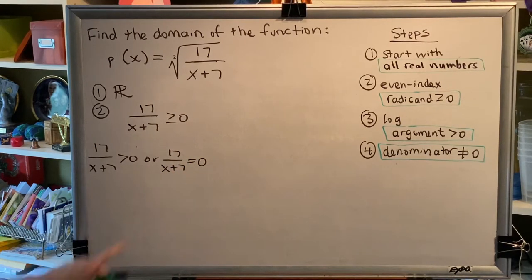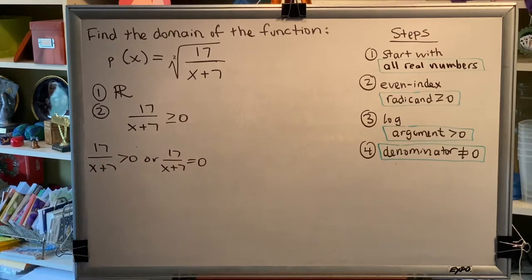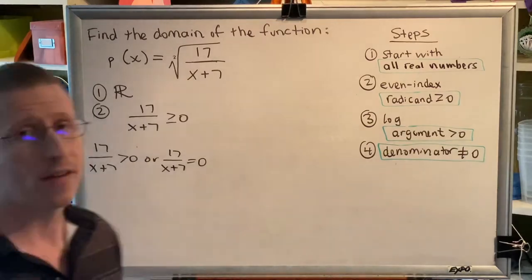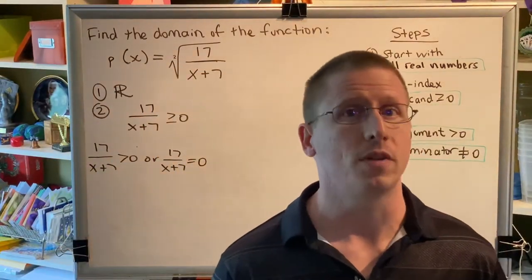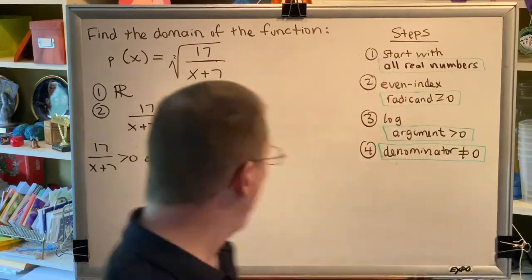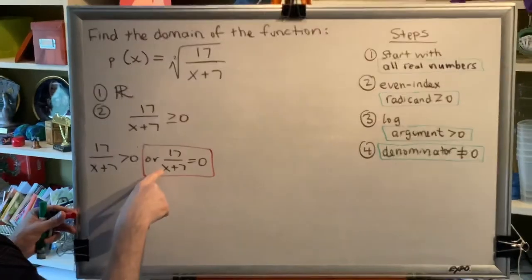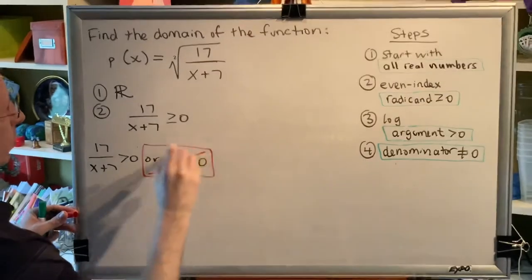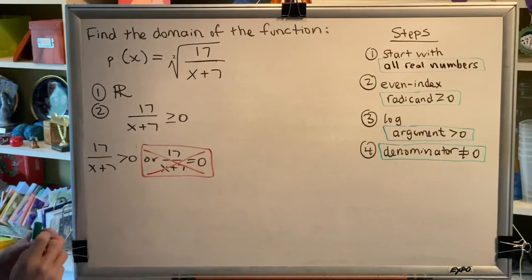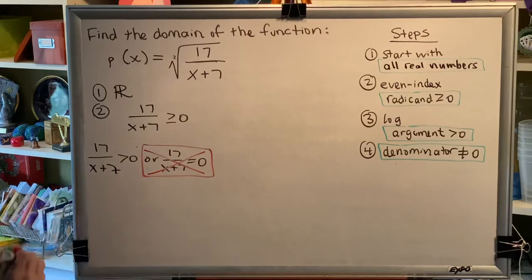Now, we learned previously that a fraction can only equal zero if its numerator is zero. And our numerator here is 17, and there's no variable up in the numerator to change that to a zero in any way. So therefore, this is not possible. It doesn't matter what value you choose for x. This fraction will never equal zero. Therefore, this is not part of our solution to this problem.